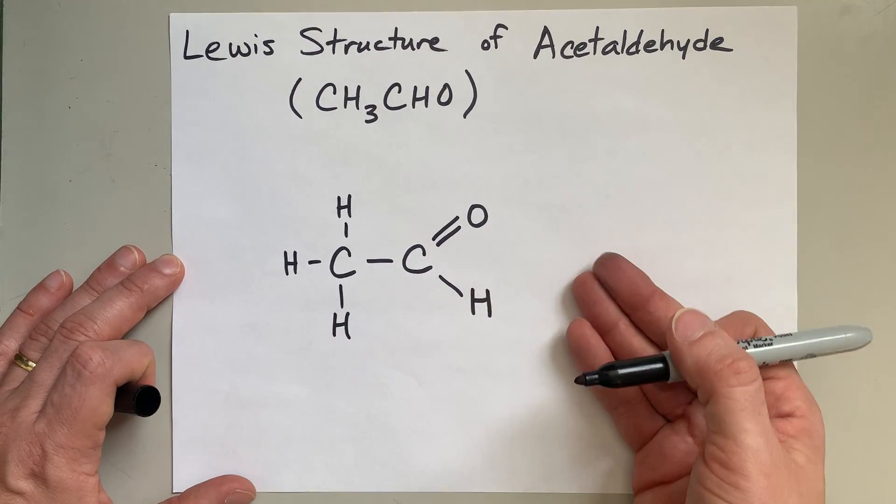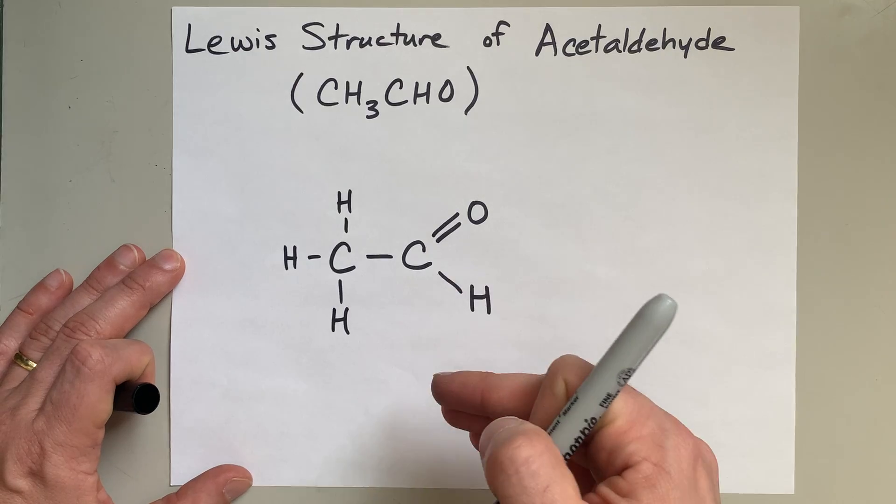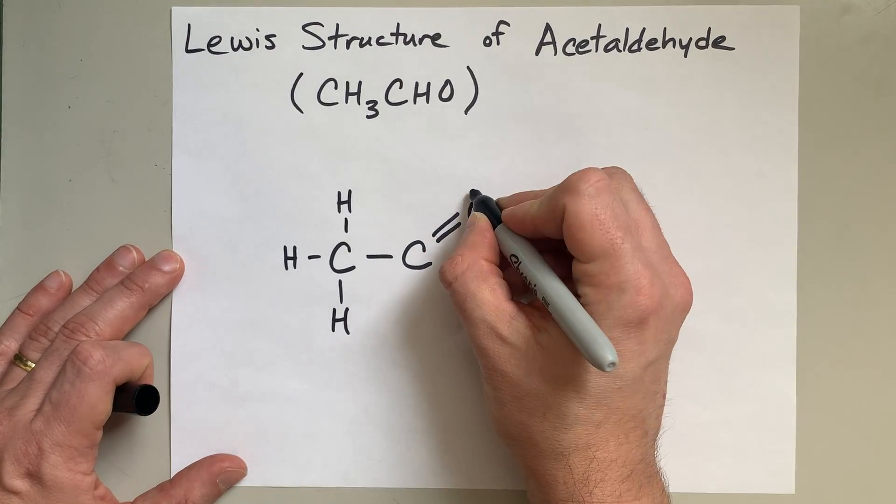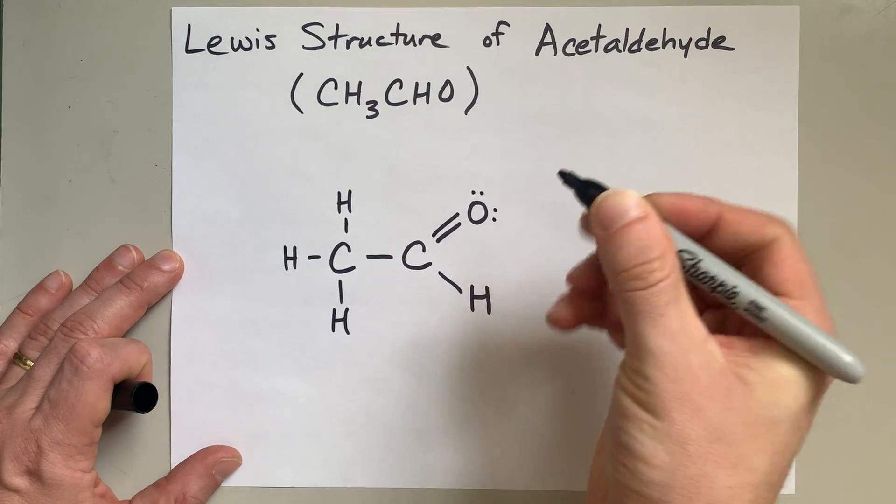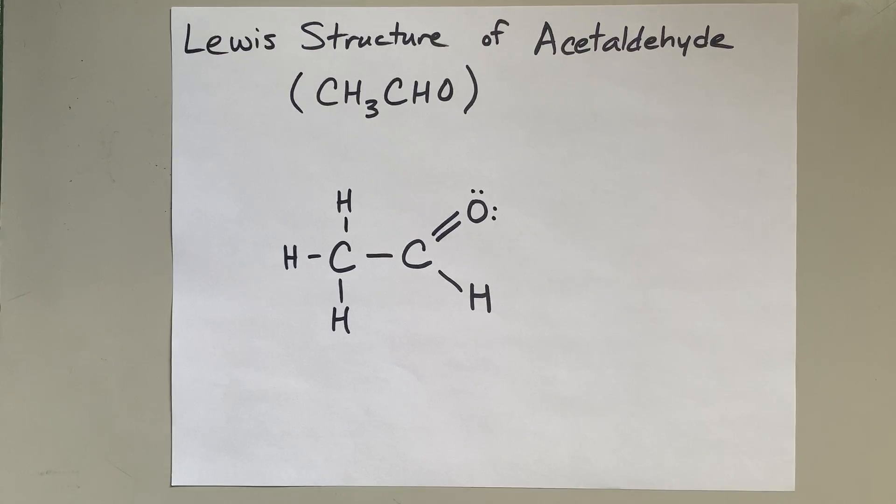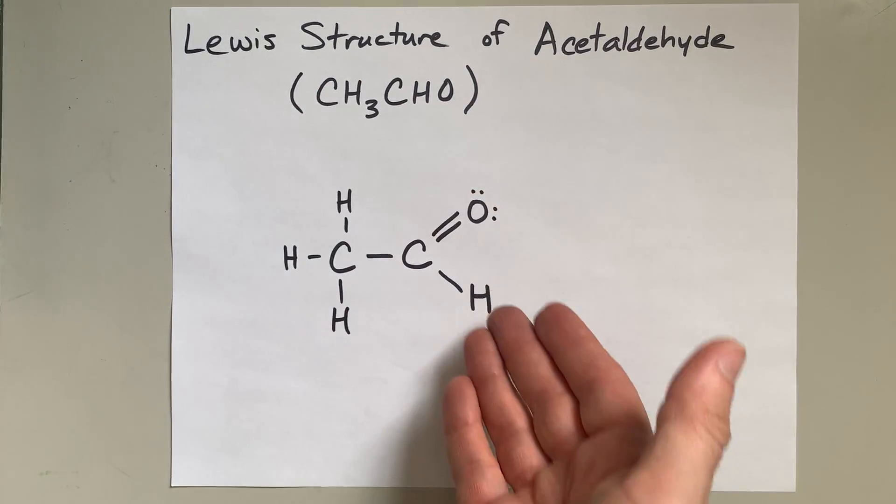And the only other thing to worry about is lone pairs, but carbon and hydrogen generally don't have lone pairs in Lewis structures. Nitrogens generally have one lone pair. Oxygen generally has two lone pairs, and that actually helps us complete the octet on oxygen there. This is the Lewis structure for acetaldehyde.